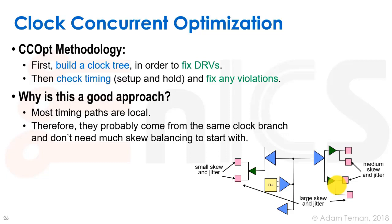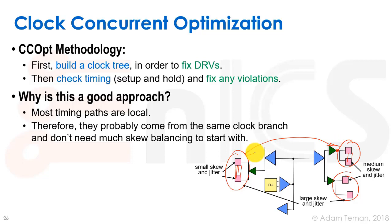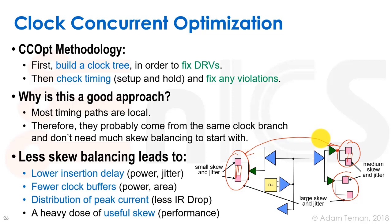Why is CCOpt a good approach? Most timing paths are local — most paths go between nearby elements and get their clock source from buffers that aren't far away. So skew between them won't be high, and we probably won't run into big setup and hold violations due to skew. The few paths that cross larger distances can be addressed with useful skew — adding skew on the clock to fix a setup or hold violation.